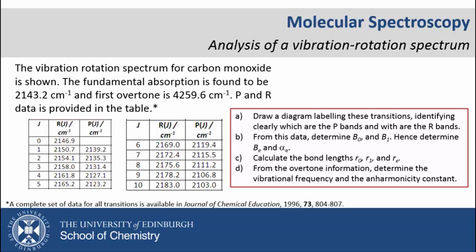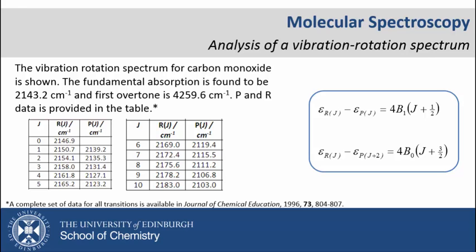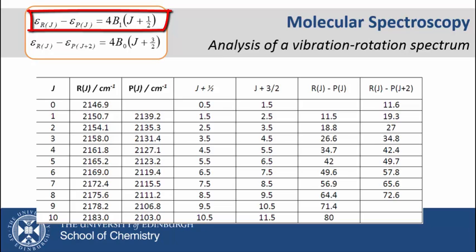Here is our data again. We are asked to determine B₀ and B₁. Remembering our combination equations, we need to perform a series of calculations. We first need to calculate the difference between R and P transitions for the same value of J. For example, J=1, E(RJ) - E(PJ) will be equal to 2150.7 - 2139.2 = 11.5. Completing this series and calculating J+1/2 will give us the data required for our first plot.